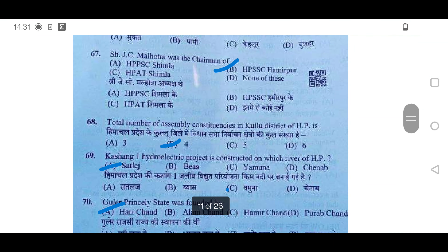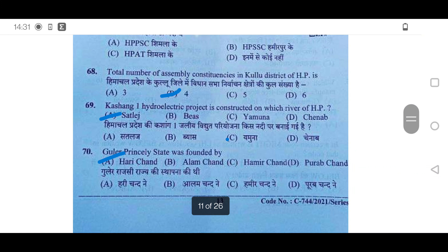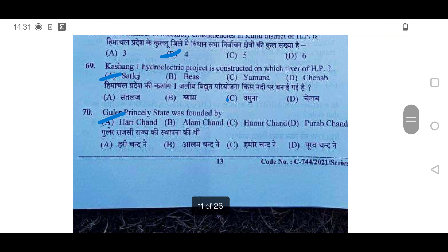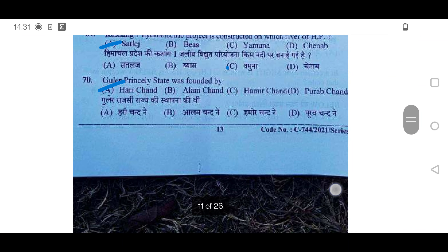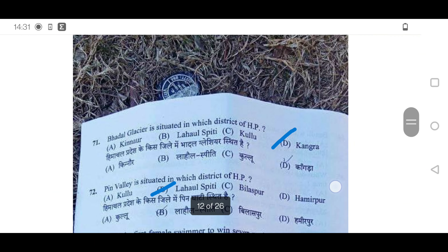67th: Shri JC Malhotra was the chairman of HPSSC Hamirpur — option B will be correct. 68th: Total number of assembly constituencies in Kullu is 4 — option D is correct. 69th: Kashang 1 hydroelectric project is constructed on which river? It is on the Sutlej — option A. Guler princely state was founded by Harijand — option A is correct.